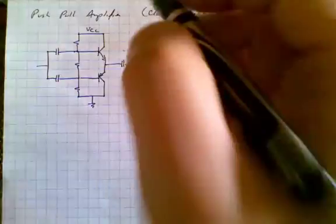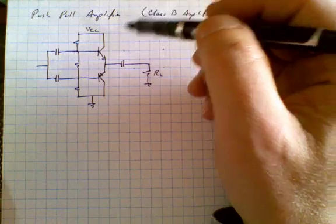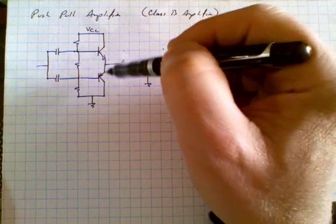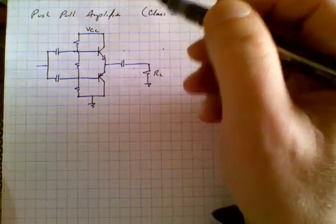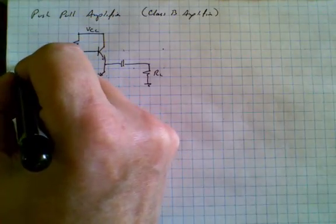How does this work? It's a very interesting circuit in that normally it amplifies. Each one of these transistors is only on for half of the period. For example, if we put an AC signal into here,